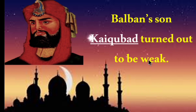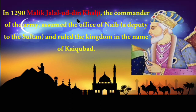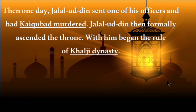Balban's son Kaikubath turned out to be a weak ruler. He was assisted by his commander Malik Jalal Uddin Khilji. In 1290, Jalal Uddin assumed the office of Naib — deputy of Sultan — and ruled the kingdom in the name of Kaikubath. Later, Jalal Uddin sent one of his officers and had Kaikubath murdered, then formally ascended the throne. With him began the rule of the Khilji dynasty.